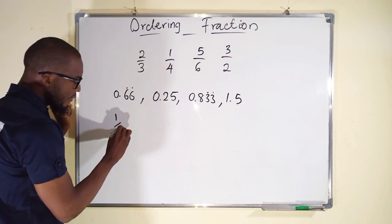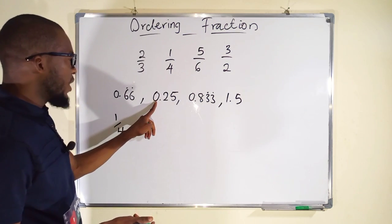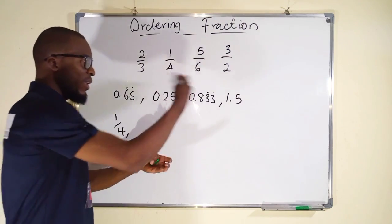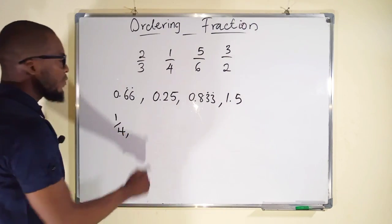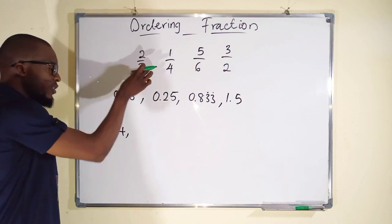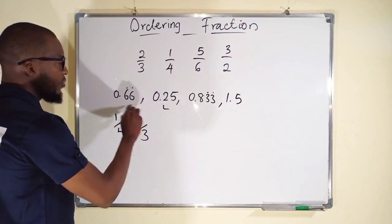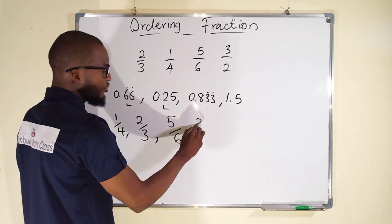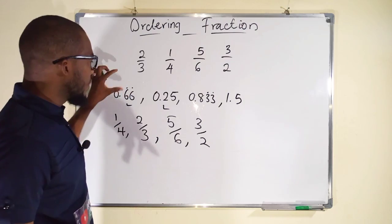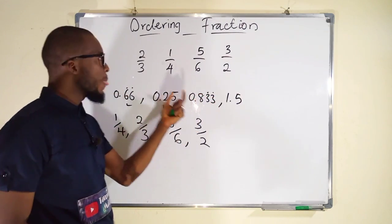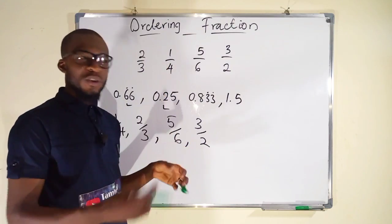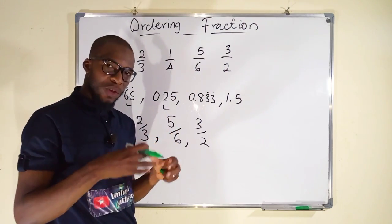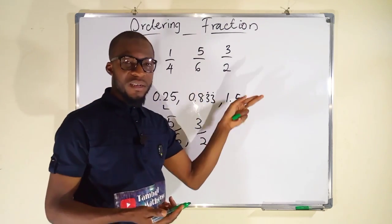The least decimal here is 0.25, which is 1 over 4, so that is the smallest fraction. Writing them in ascending order: 1 over 4, followed by 2 over 3 which is 0.66 repeating, followed by 5 over 6, and lastly 3 over 2. You can either transform the fractions to their decimal form and identify the least to greatest, or you can transform their denominators to be the same using the idea of equivalent fractions to identify the least and the greatest fraction.